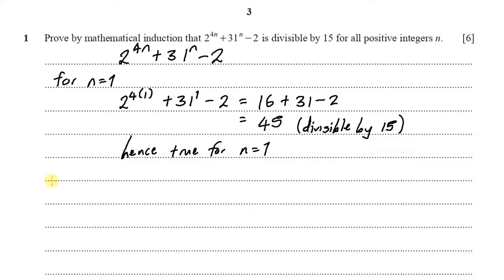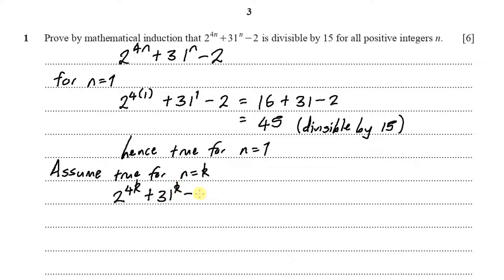Now we make the inductive assumption: assume true for n equals k. This means the formula 2 to the power of 4k plus 31 to the power of k minus 2 is divisible by 15 — in other words, it is a multiple of 15, so we say it equals 15a.